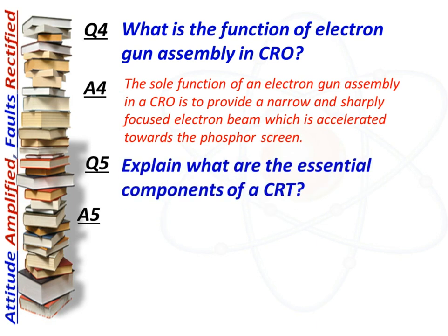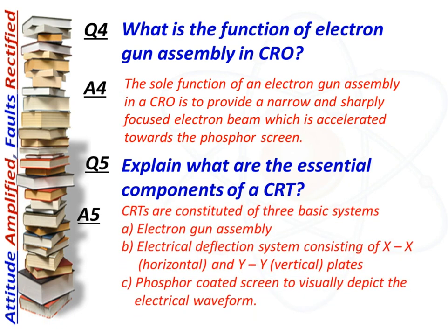Next question: what are the essential components of a CRT, i.e. cathode ray tube? Answer: CRTs are constituted of three basic systems: first, the electron gun assembly; second, the electrical deflection system consisting of horizontal and vertical plates; and third, a phosphor-coated screen to visually depict the electrical waveform.